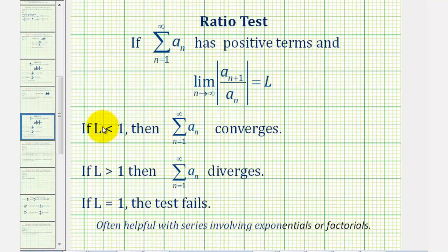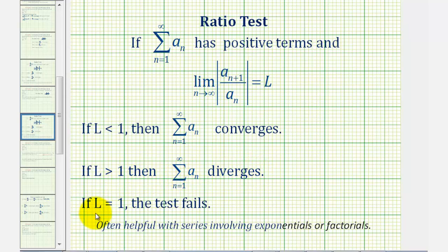For a review: if L is less than one, then the series converges. If L is greater than one, then the series diverges. And if L equals one, the test fails and we have to apply a different test.